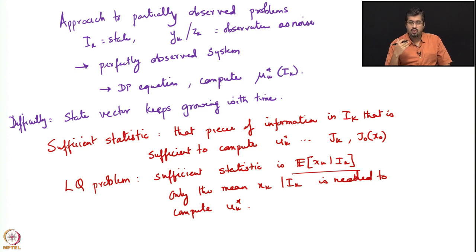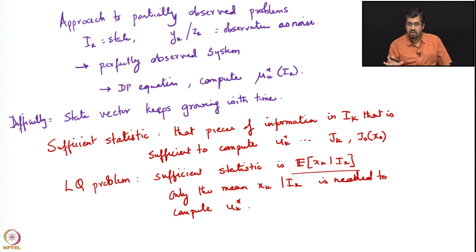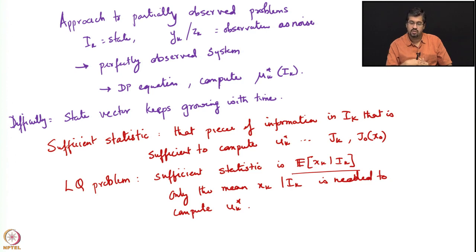In the LQG problem, it further happens that the sufficient statistic itself can be computed in a recursive form. The sufficient statistic remains the conditional expectation of the state given the information, but it can itself be computed easily thanks to the Gaussian nature of the noise.